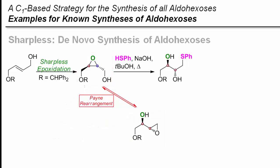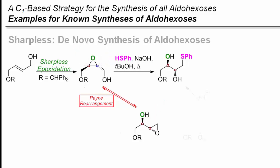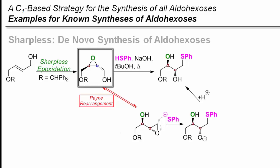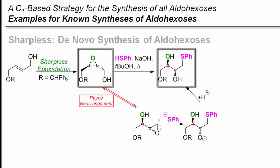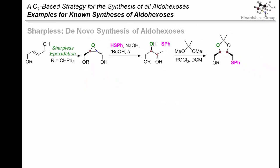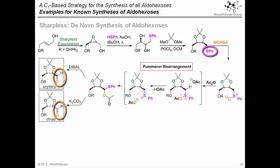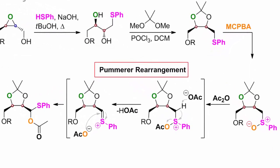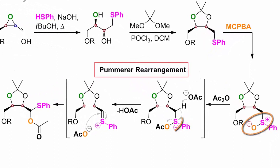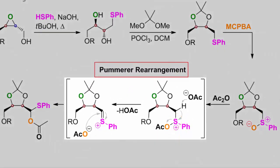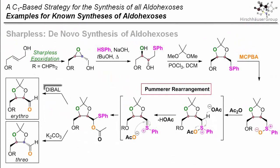Now, thiolate has the choice between attacking one of the three secondary or the one primary carbon atom, and obviously it goes for the latter. The rest of the substrate reacts in a classic Curtin-Hammett type fashion to the erythro glycol. In the next step, this erythro glycol is tied up in a ketal and the thioether is oxidized to an aldehyde by a Pummerer reaction. This involves oxidation to the sulfoxide and subsequent acylation, which is accompanied by deprotonation and 1,2-migration of the acetate.